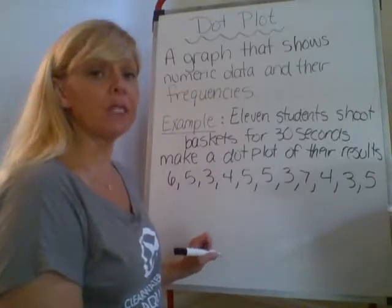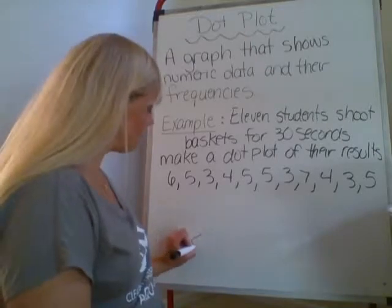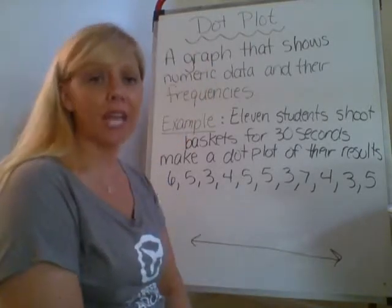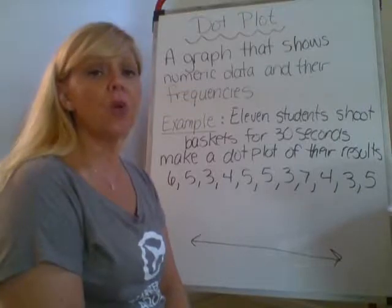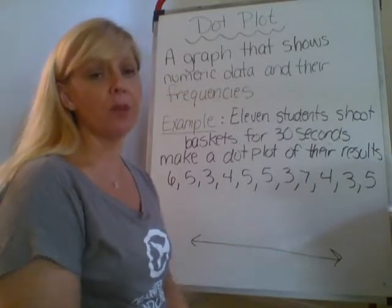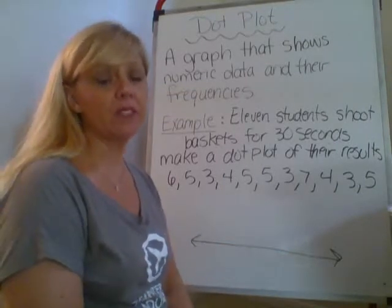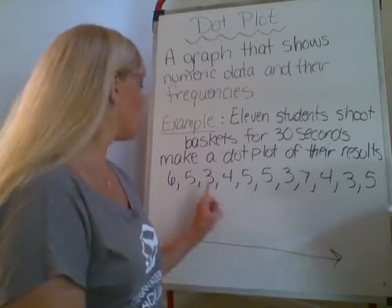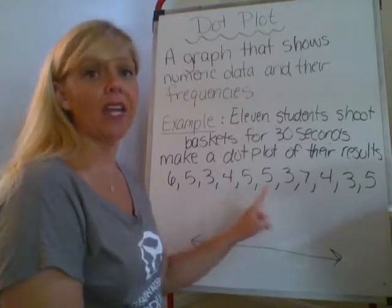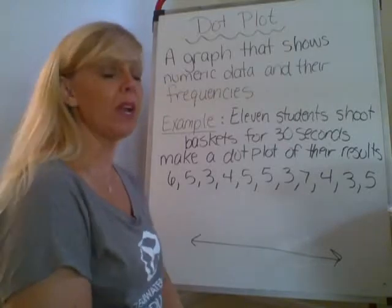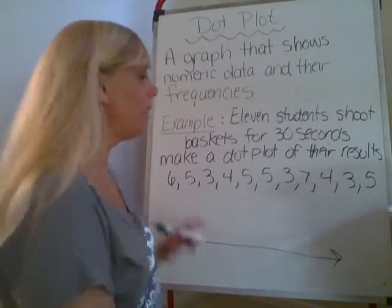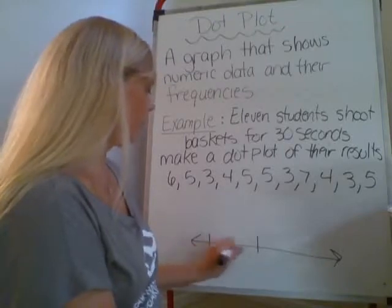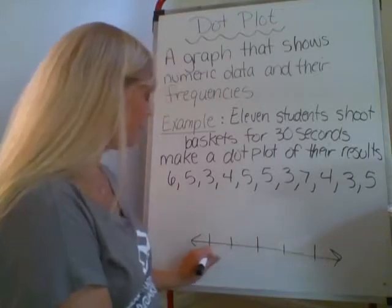The first thing we need to do is make our number line, and we need to look at the scale of our data — specifically the smallest and the largest number. Our lowest number is 3 and our highest number is 7, so we need to make our number line with five numbers: 3, 4, 5, 6, 7.